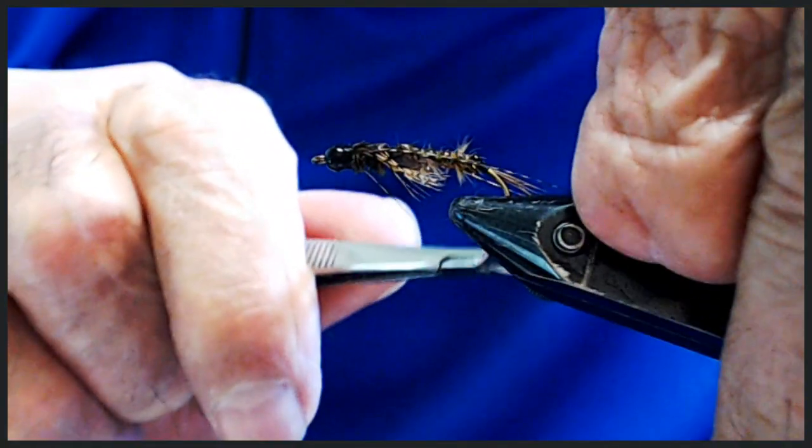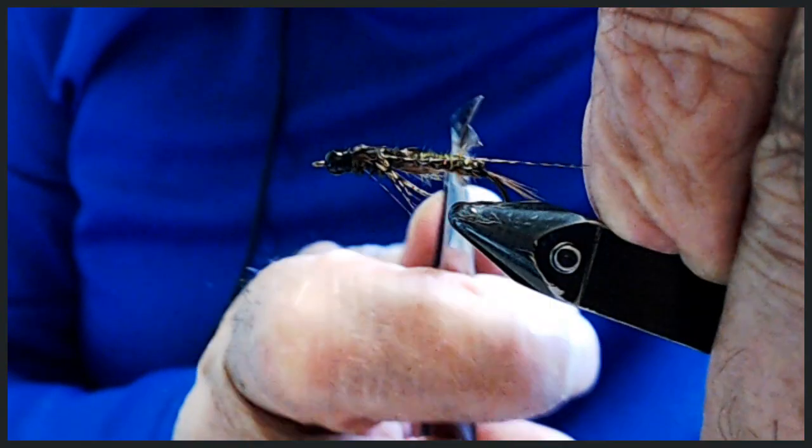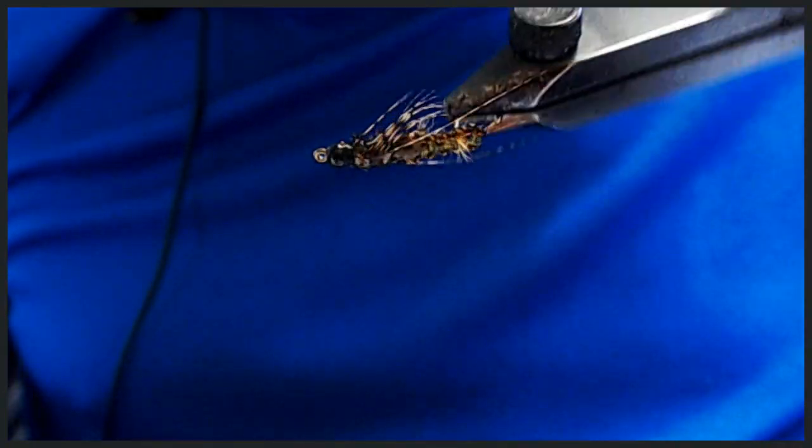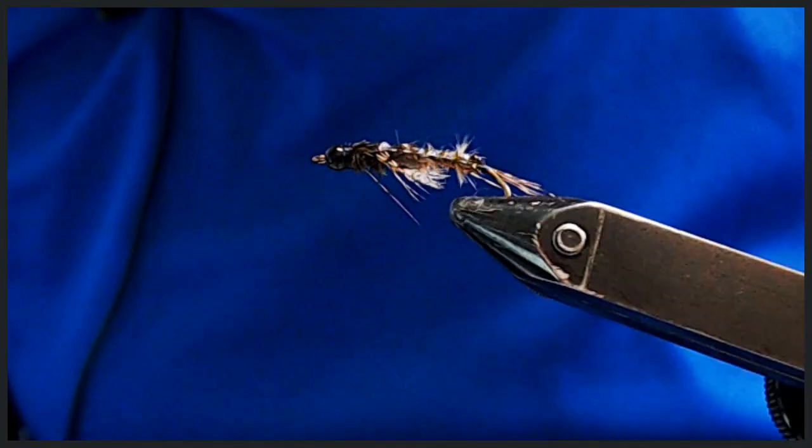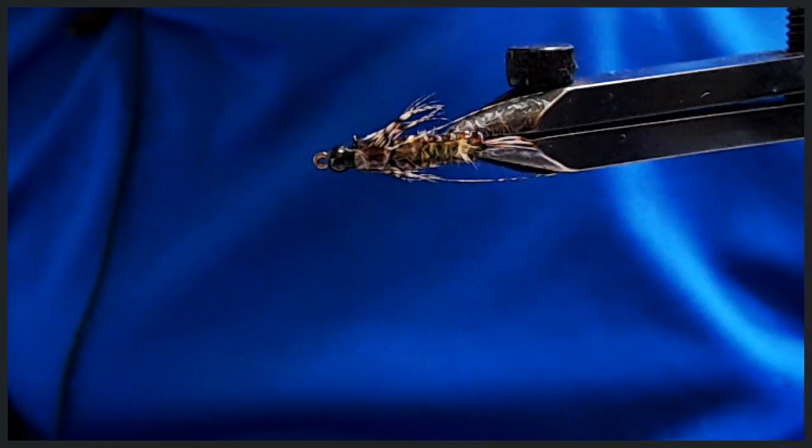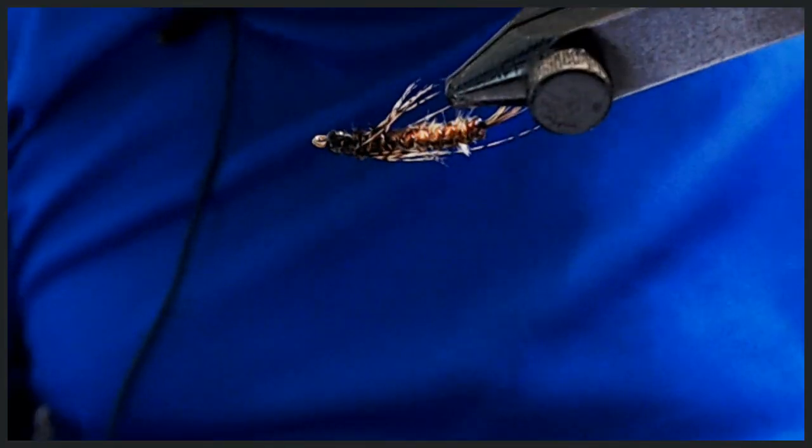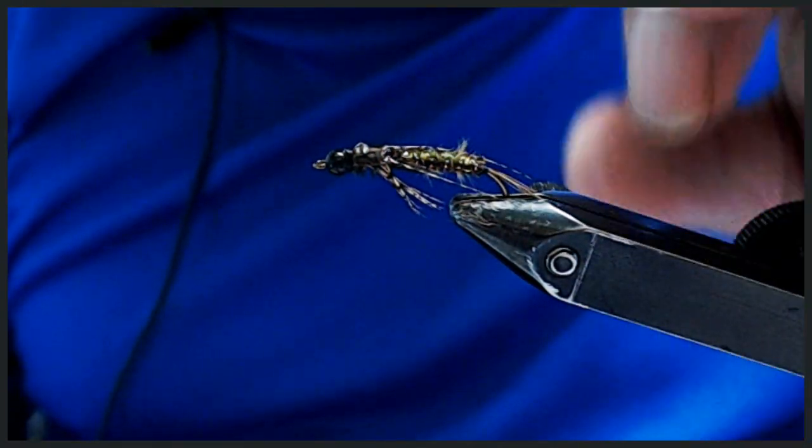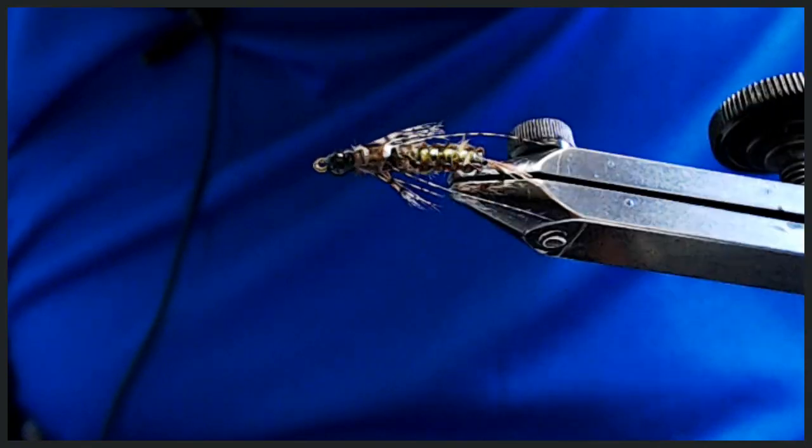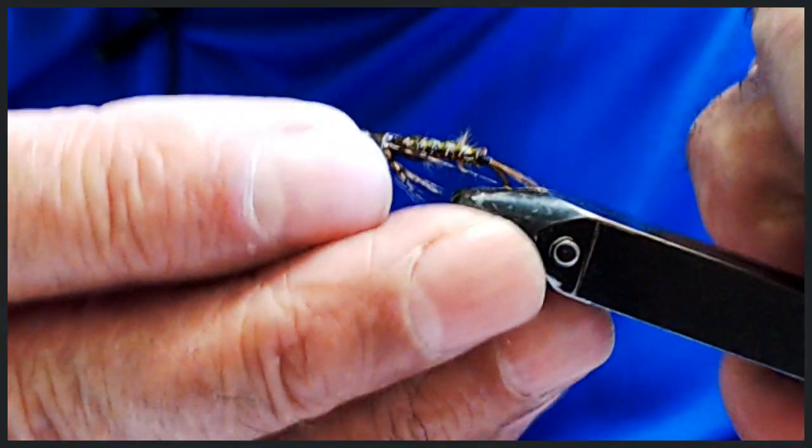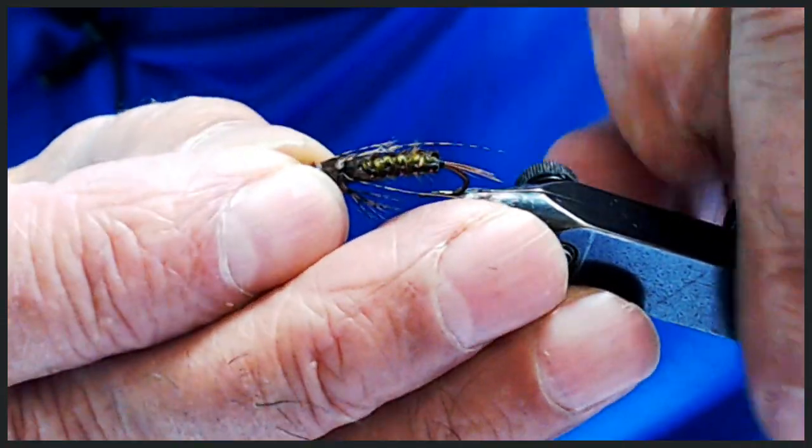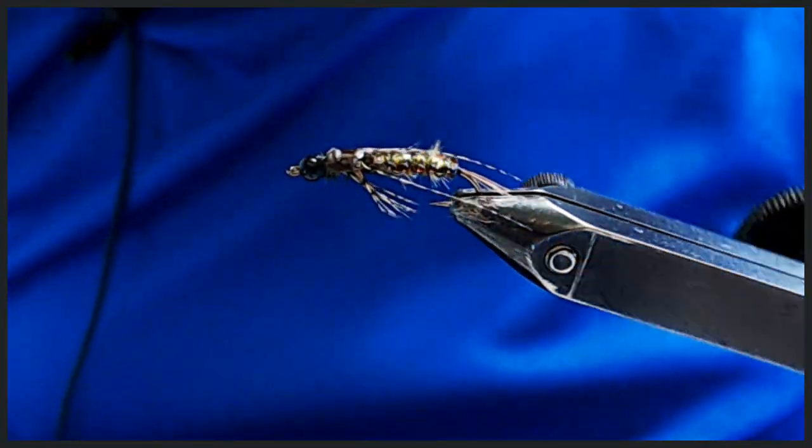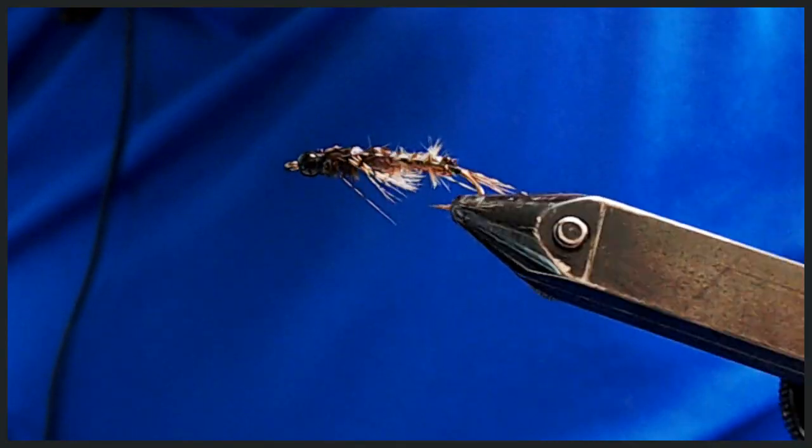Now you take your feelers and we're going to trim for length. About that long. And that is your braided nymph. Makes a beautiful caddis nymph. As you can see it's not too bushy. If it is you can just take your scissors and trim it. But that is a finished braided nymph. You won't mind fishing that anytime.